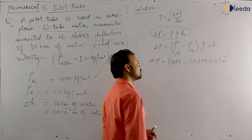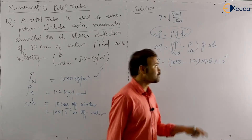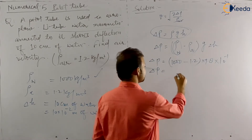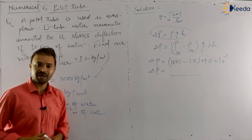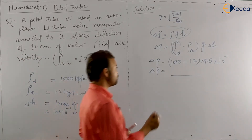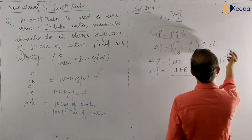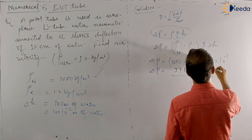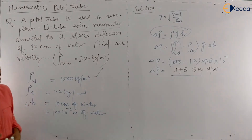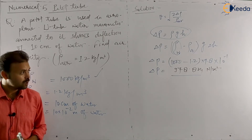You can directly use 1000 × 9.8 × 10⁻¹, or use the accurate formula (ρ_water − ρ_air) × g × ΔH. Calculate delta P using your calculator. Delta P comes out as approximately 978.824 Newtons per meter square. Please verify this value — delta P after calculation should be 978.824 N/m².